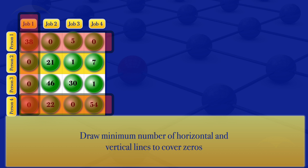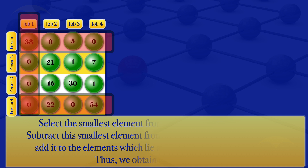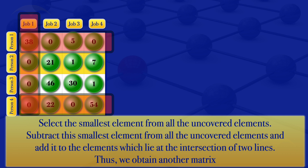All zeros are now covered. We select the smallest element from all uncovered elements. The uncovered elements are 21, 1, 7, 46, 30, and 1, and the smallest element is 1. We subtract this smallest element from all uncovered elements and add it to elements lying at the intersection of two lines.